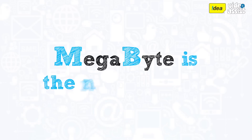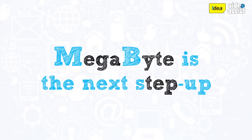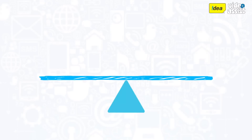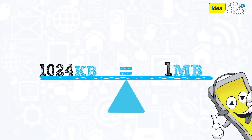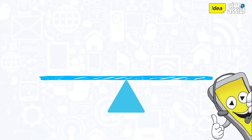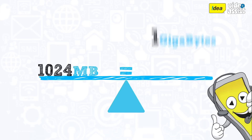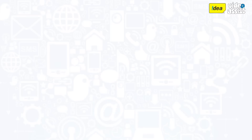Megabyte is the next step up. Every 1024 kilobytes equals 1 megabyte. Further, every 1024 megabytes equals 1 gigabyte.